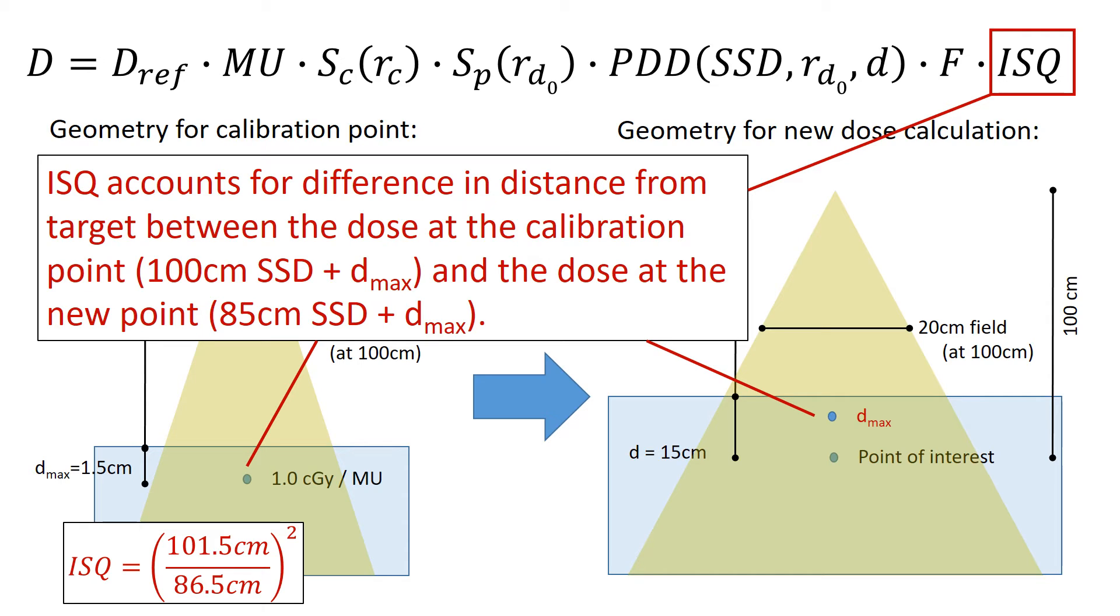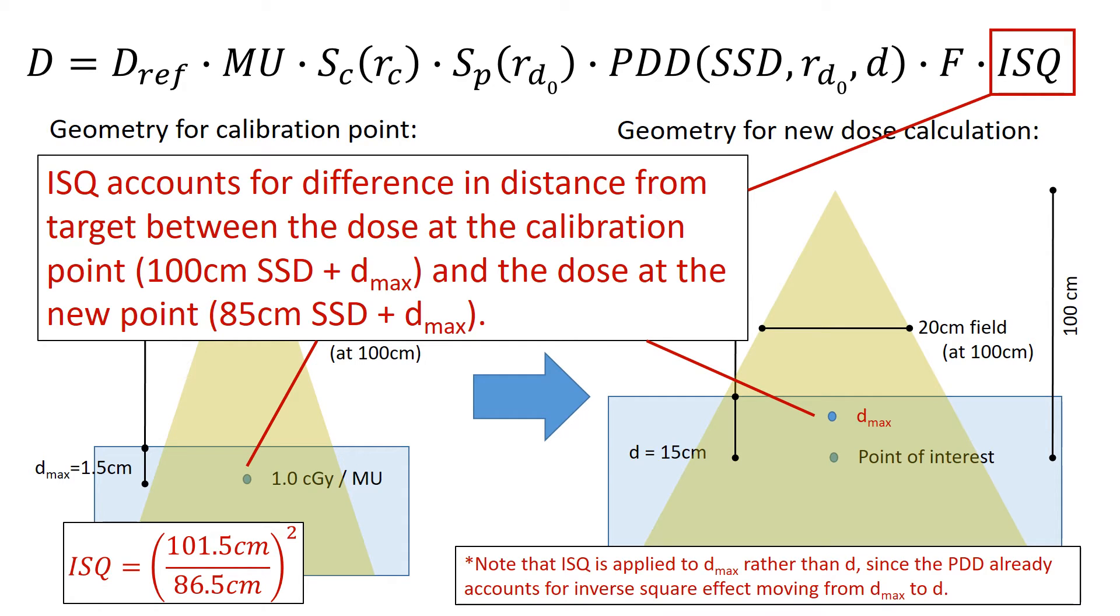Which is, for a PDD method, it's going to be at D max. And note that the inverse square is applied to D max rather than D, since the PDD already accounts for inverse square effect moving from D max to D.